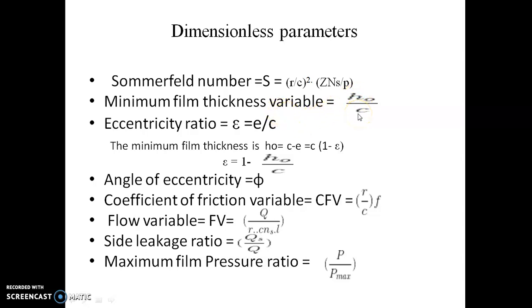Minimum film thickness variable is given by h0 by c. Next is eccentricity ratio, it is the ratio of eccentricity to the radial clearance. It is given by ε. As we know minimum film thickness h0 = c - e, so ε = 1 - h0/c.